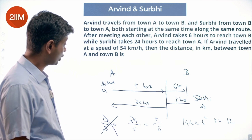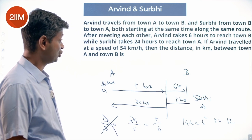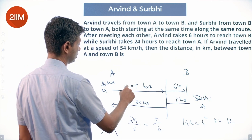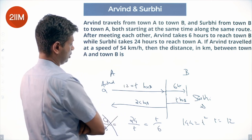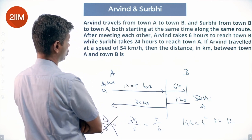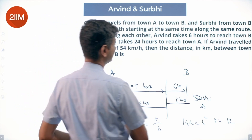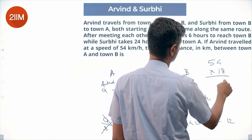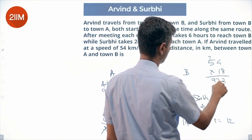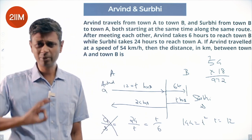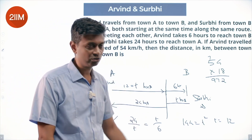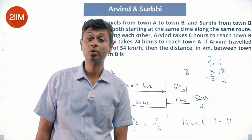If Arvind travels at a speed of 54 kilometers per hour, we need the distance in kilometers between town A and town B. T is 12, so Arvind travels for a total of 18 hours. The distance is 54 times 18, which equals 972 kilometers. The standard template here is: T squared equals 24 times 6, so T equals the square root of 144, which is 12.